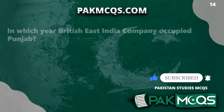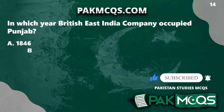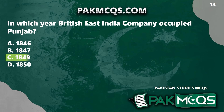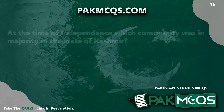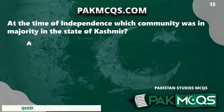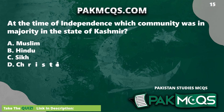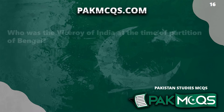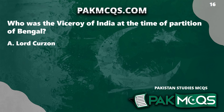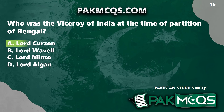In which year did the British East India Company occupy Punjab? 1849. At the time of independence, which community was in majority in the state of Kashmir? Muslim. Who was the Viceroy of India at the time of the partition of Bengal? Lord Curzon.